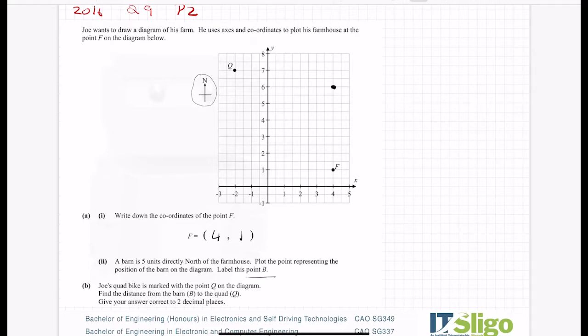And if I've gone 5 up, the other thing I should note if every number is 2 boxes is that I should be going up 10 boxes. So 1, 2, 3, 4, 5, 6, 7, 8, 9, 10. That looks good. And don't forget to label it B.